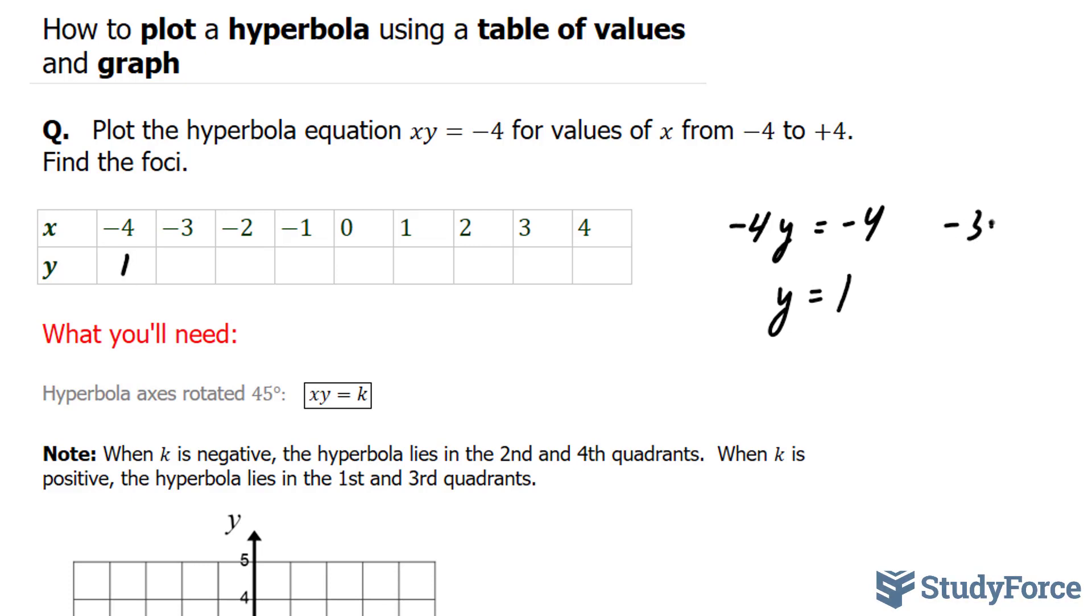Similarly, negative 3 times y is equal to negative 4. Dividing both sides by negative 3, I end up with 4 over 3. Let's do one more and then the rest will be filled in automatically. Negative 2 times y is equal to negative 4. Y is equal to positive 2.